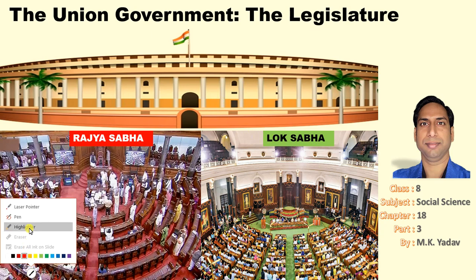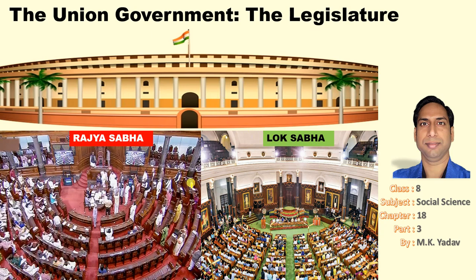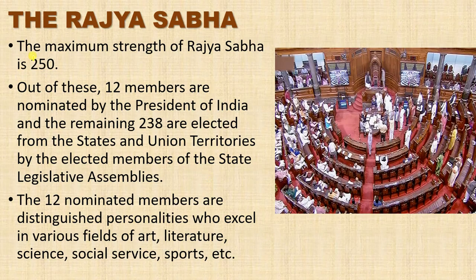The maximum strength of Rajya Sabha is 250. Out of these, 12 members are nominated by the President of India and the remaining 238 are elected from the states and union territories by the elected members of the state legislative assemblies.